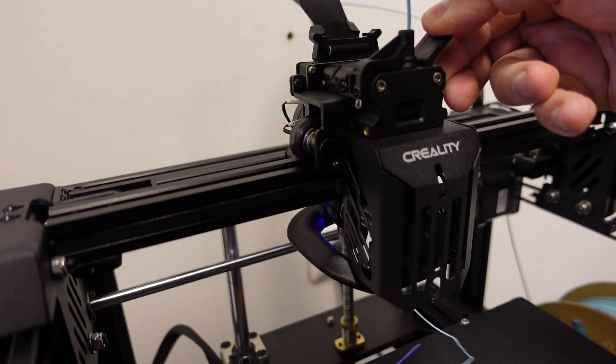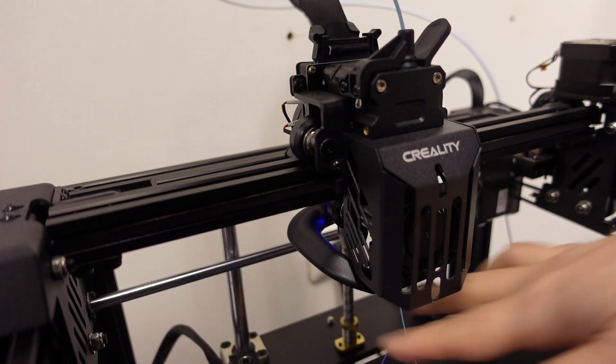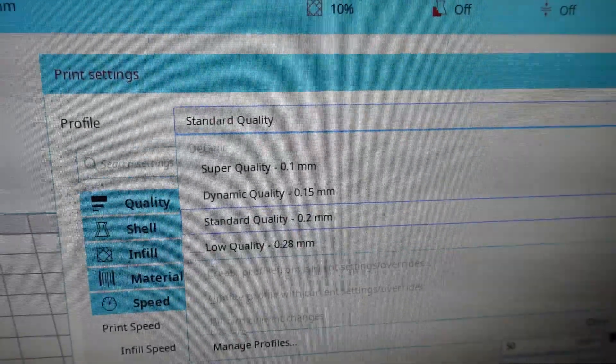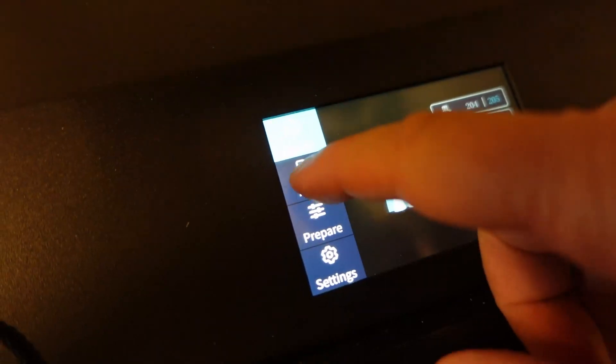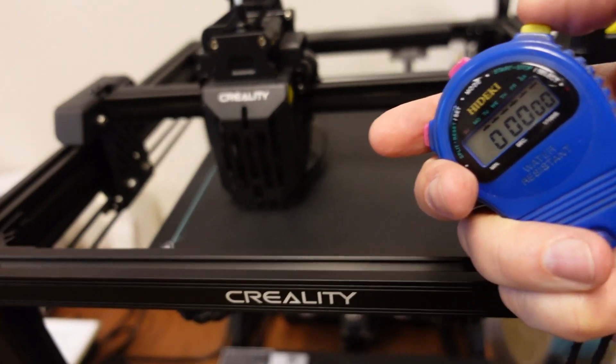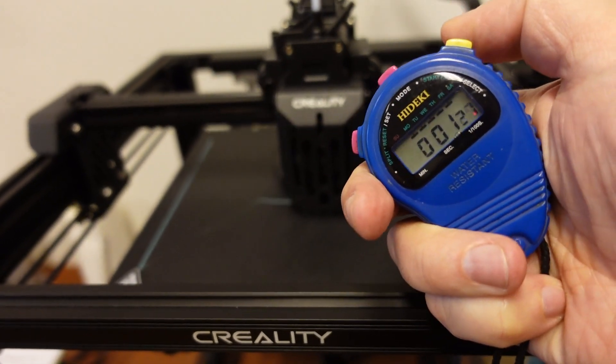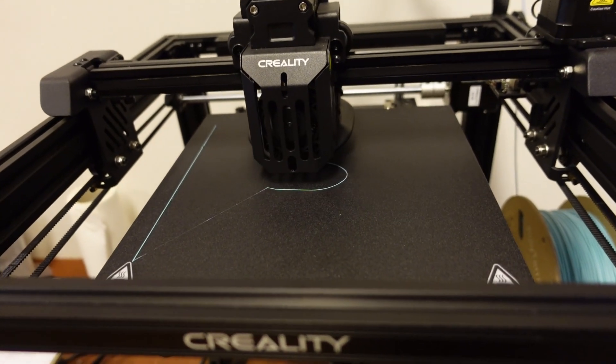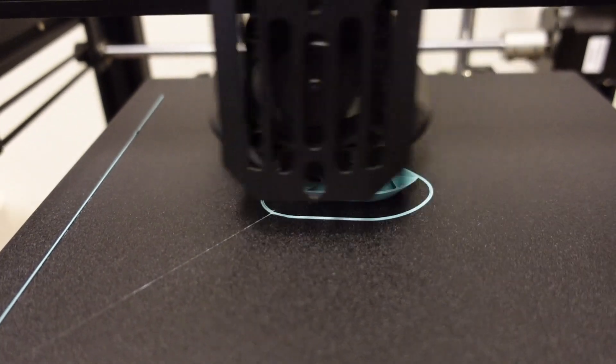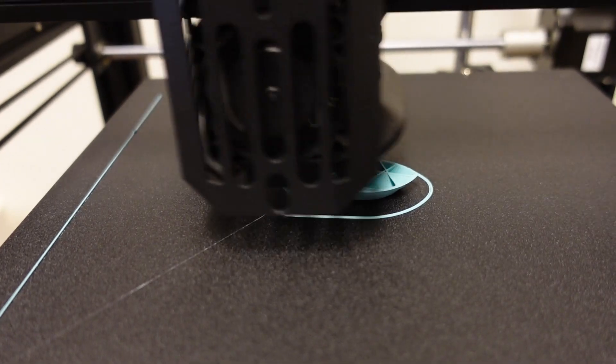I am inserting the filament, the Polyterra in the blue color. For all printings I will use the standard quality 0.2mm layer height and I am starting with the Benchy. I will measure the times when the real printing starts so I don't want to include the bed heating times. All this you can see in real time speed; I don't want to speed it up.